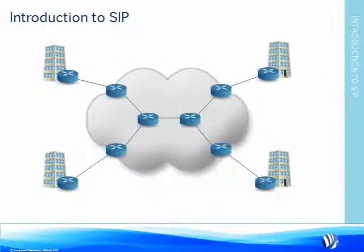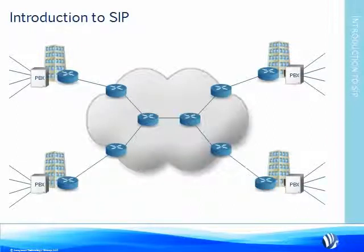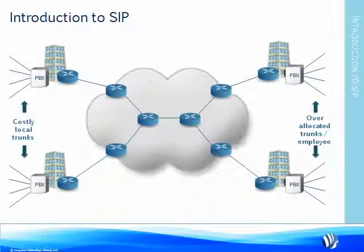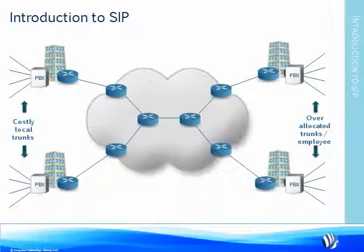Taking the same MPLS network design we looked at previously, we're going to add the end-office voice switches at the remote locations, which are predominantly used today to support local and long-distance calls over the public switch telephone network. Here you see a lot of expensive hardware to buy and maintain, along with costly local voice circuits. These voice circuits have to be over-allocated to support smaller populations at the edge of your network — a small 10-person sales office can sometimes experience times when most, if not all, staff members are on the phone at the same time.